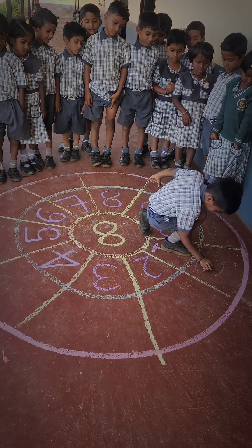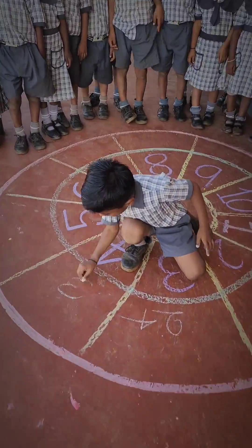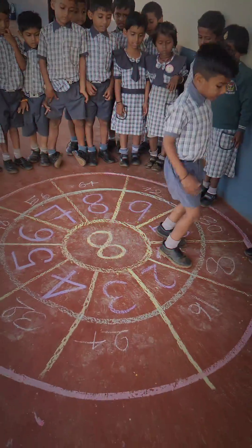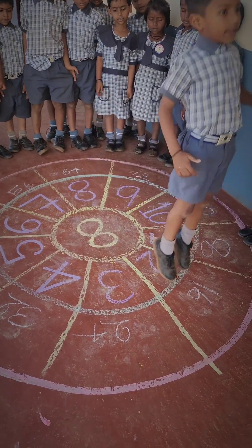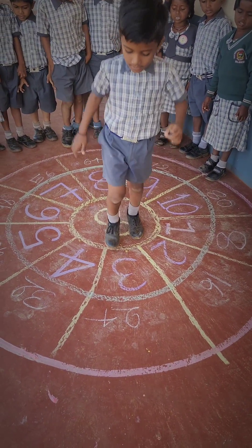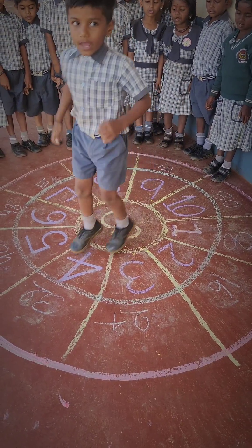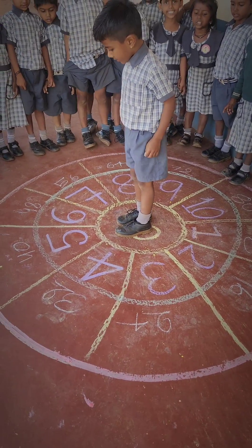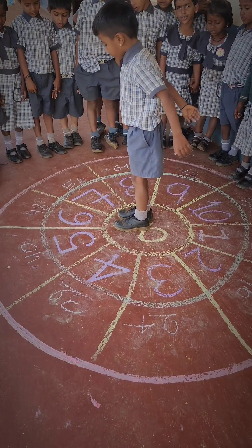8 ones are 8. 8 twos are 16. 8 threes are 24. 8 fours are 32. 8 fives are 40.